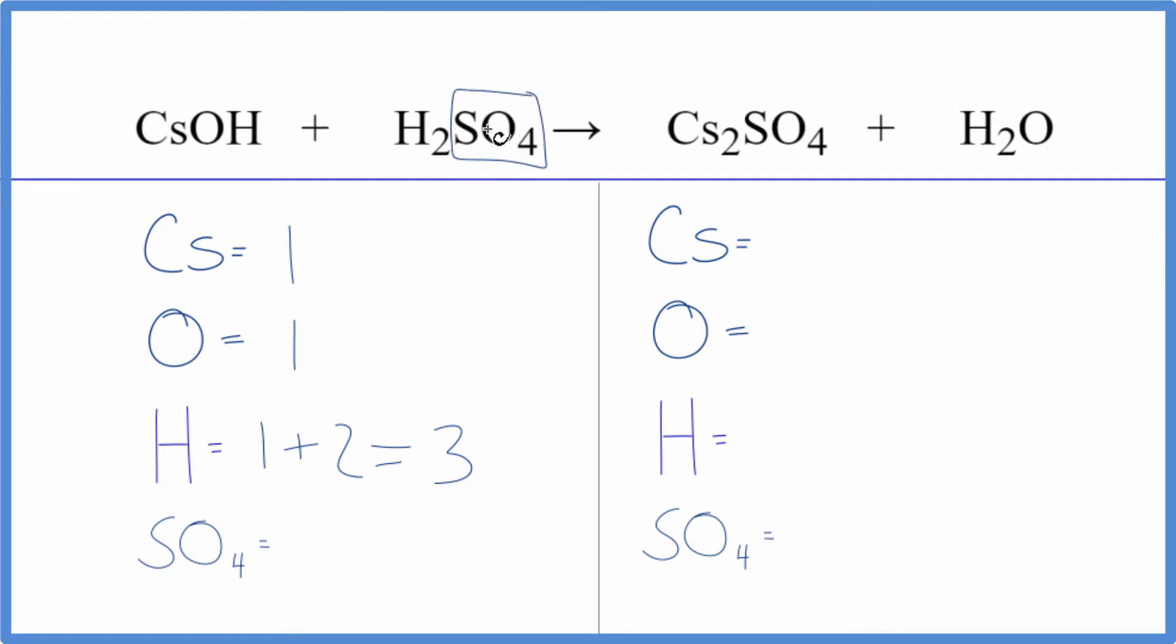That's because I have this sulfate group, this SO4 here and here. It's a polyatomic ion. It stays together. Since it stays together, I just count it as one thing. I have one sulfate ion here. That's it.